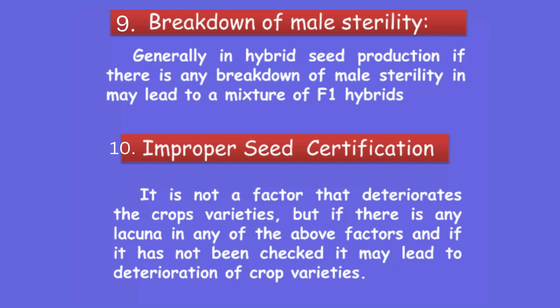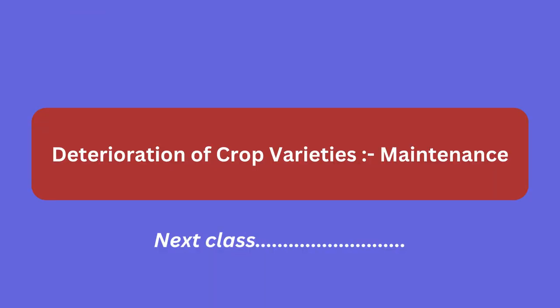The last factor is improper seed certification. This is not a factor that directly deteriorates the crop variety, but if there is any lacuna in the previous factors and it has not been properly checked, it leads to deterioration of the crop varieties. These are all the factors causing deterioration of crop varieties. In the next class, I will discuss the different solutions for how to maintain and prevent deterioration of crop varieties.